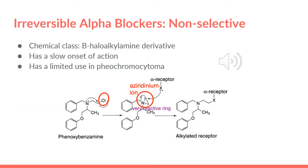For the irreversible alpha blockers non-selective, we have phenoxybenzamine. Its chemical class is beta-haloalkylamine derivative. It has a slow onset of action. It is a pro-drug and needs to be activated in order to be active. And it has a limited use in pheochromocytoma.